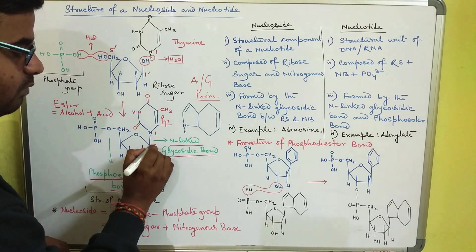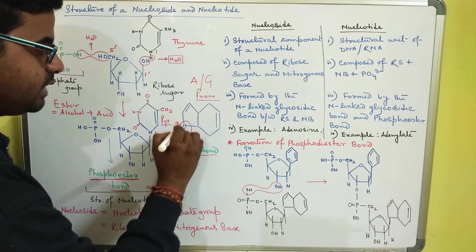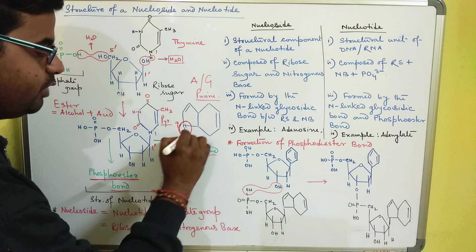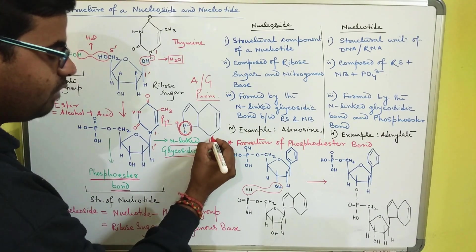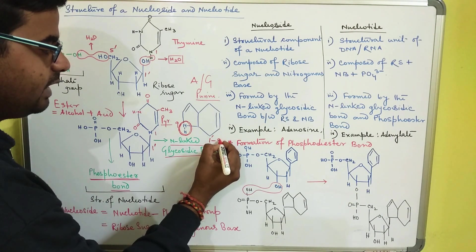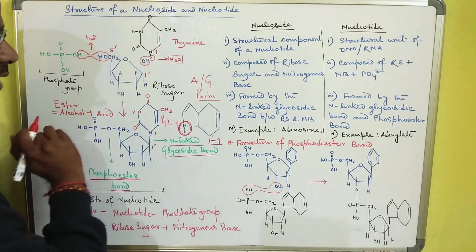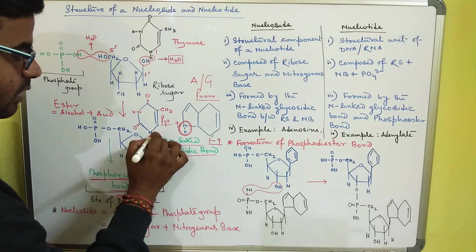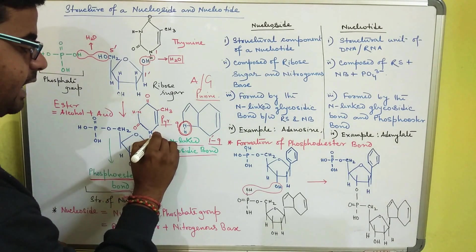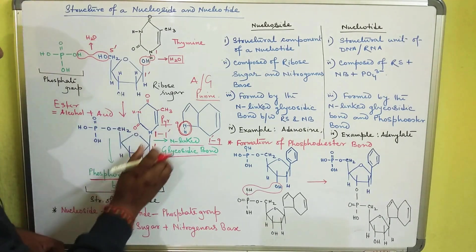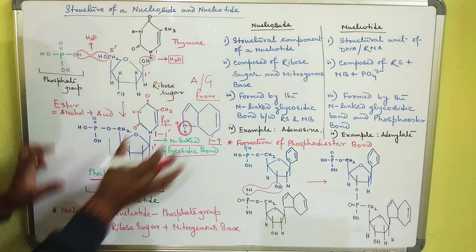So for a purine the bond is between carbon one prime of the ribose sugar and number nine of the nitrogenous base. For a pyrimidine the bond is between number one of the pyrimidine and number one prime of the ribose sugar. This is how the nucleotide is formed.